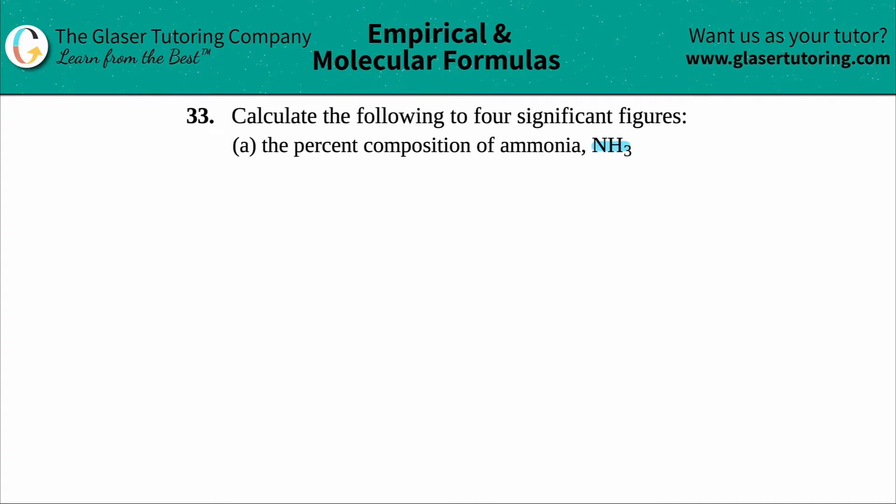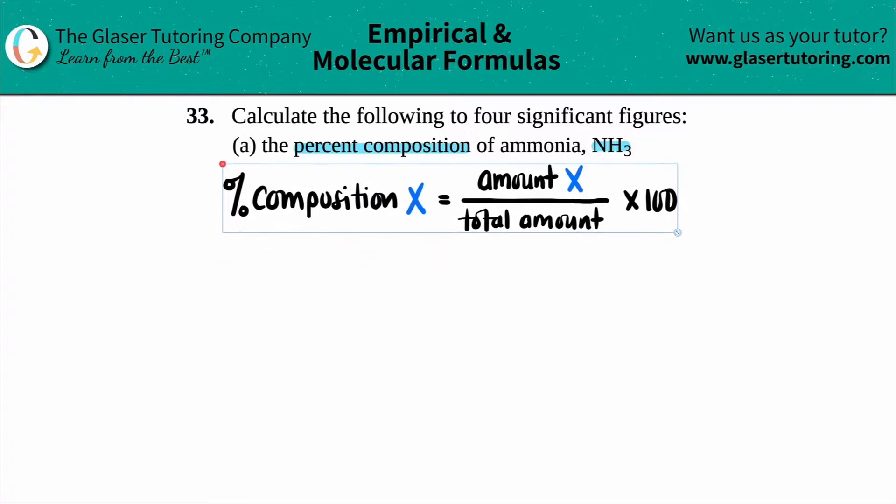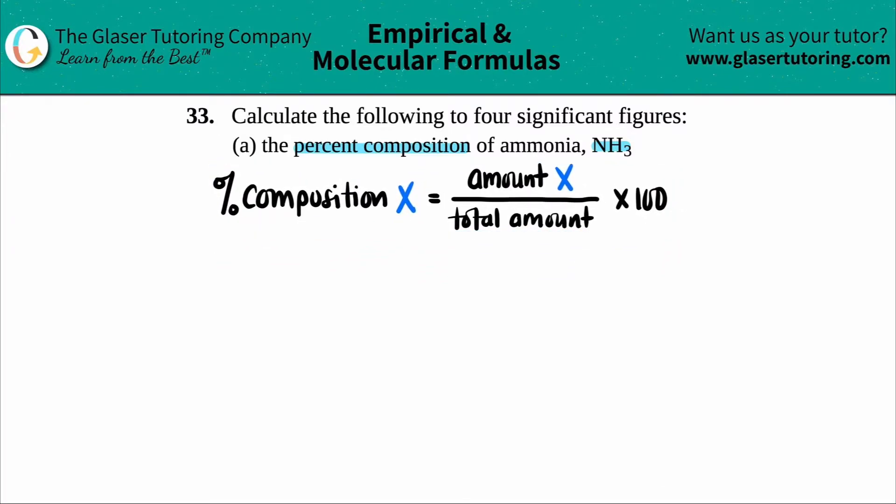The percent composition - what they're asking for - they're looking for the percent composition of ammonia, NH3. That's just coming from a simple formula. I'm going to put this up here. So to find any percent composition, they're specifically saying for an individual element or a group of elements in a certain compound, I just label it as X. All we have to do is find out the amount of that element and divide it by the total amount.